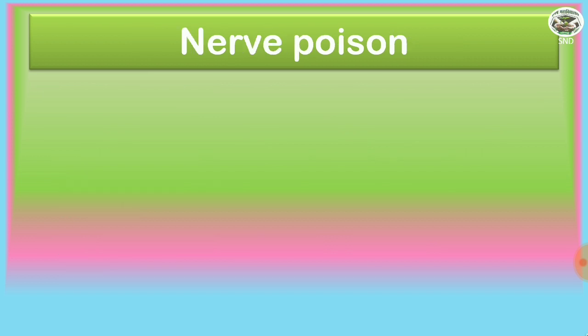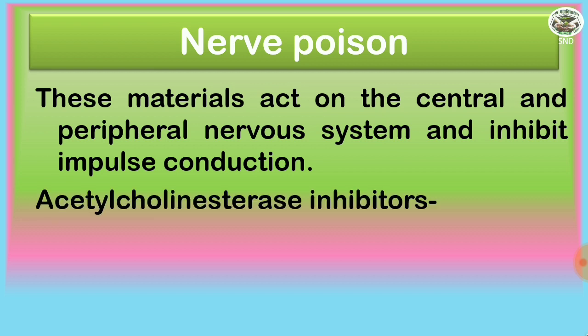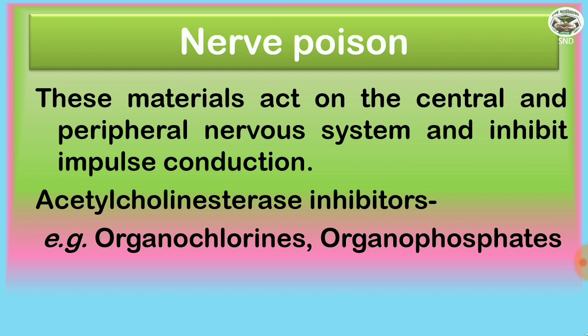Then the nerve poison. These materials act on the central and peripheral nervous system and inhibit the impulse conduction. Acetylcholinesterase inhibitors, for example, organochlorines, organophosphates, and carbamates.